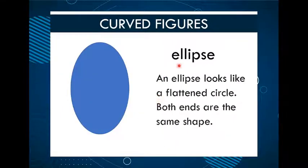Then we have the ellipse. An ellipse looks like a flattened circle. Both ends are the same shape. So here we have the ellipse and as it says there, it looks like a circle that's been squished a little bit.